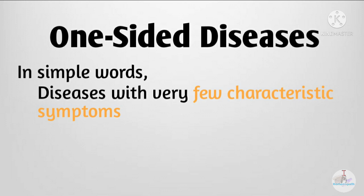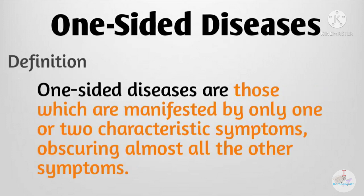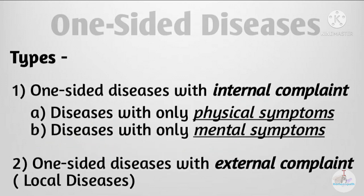Don't consider the actual literal meaning of the words 'one-sided diseases.' One-sided diseases are chronic in nature and psoric in origin. For the exams, go with the actual definition: one-sided diseases are those which are manifested by only one or two characteristic symptoms, obscuring almost all the other symptoms. Here, 'manifested by' means the diseases are present with, and 'obscuring' means hidden or concealed symptoms.